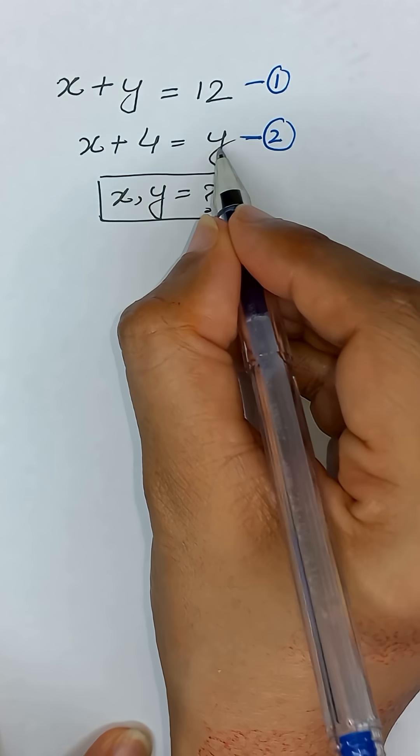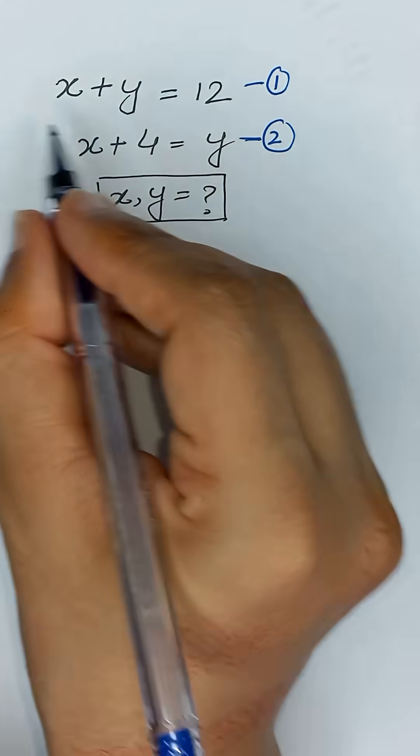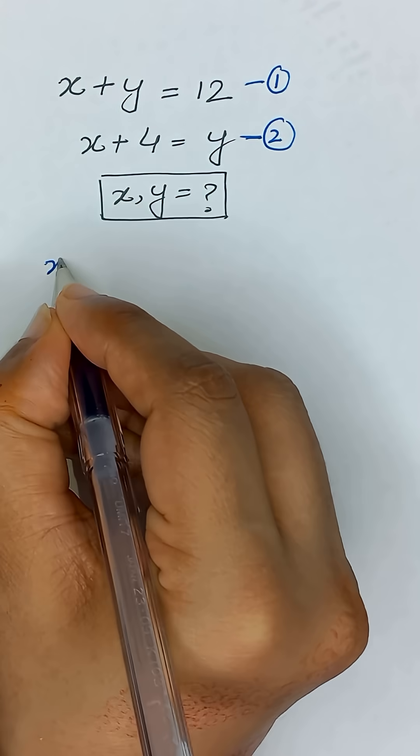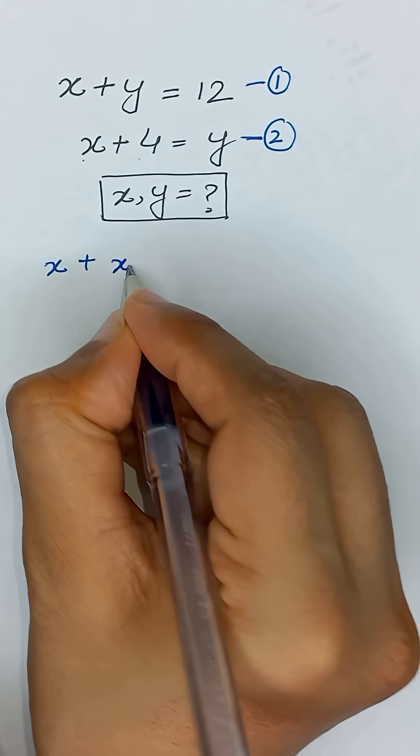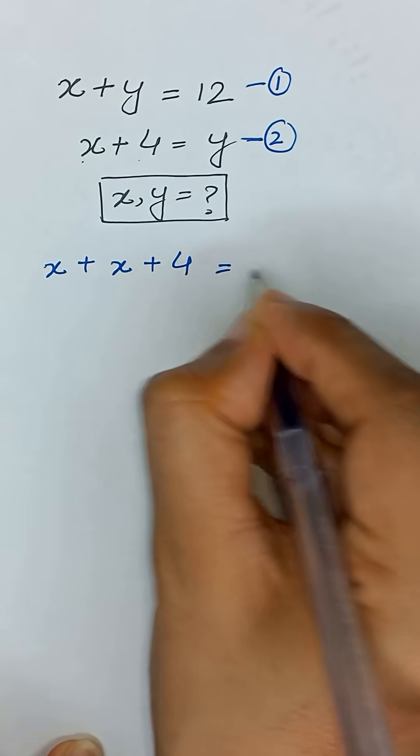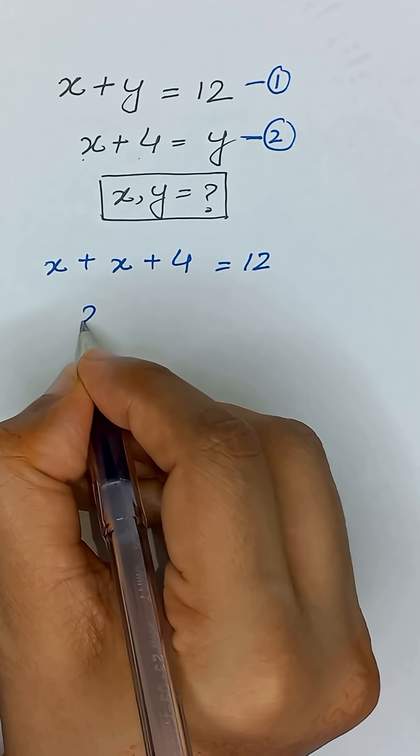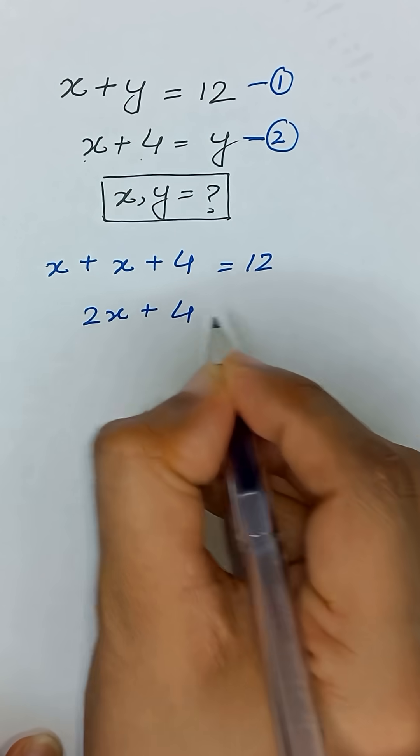So we will substitute this value of y in equation number 1. It will become x plus y will be x plus 4 is equal to 12. So it will become 2x plus 4 is equal to 12.